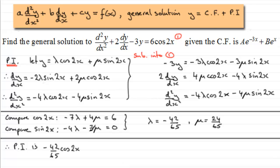And then we've got plus mu sin2x. So it's plus 24 over 65 of sin2x. And that gives us our particular integral.